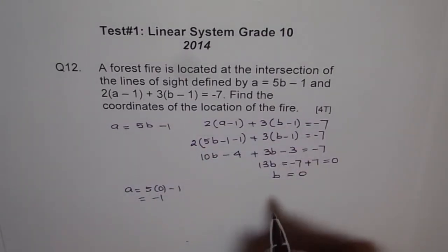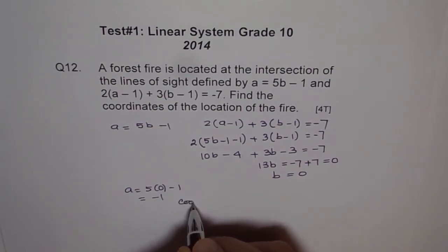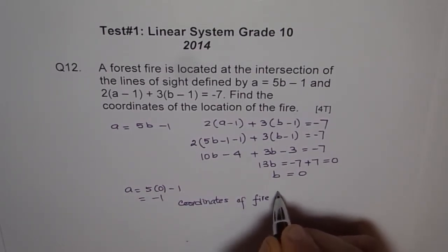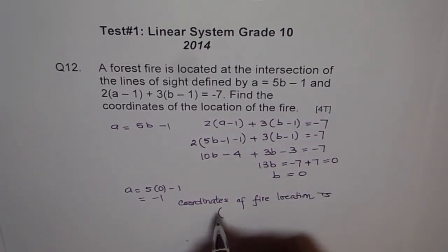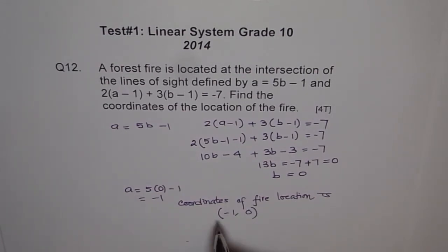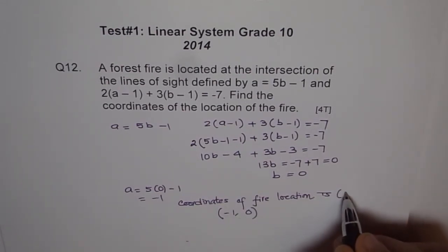What is the coordinates of the location of the fire? We say coordinates of fire location is A is minus 1 and B is 0. That becomes our coordinate in terms of A and B.